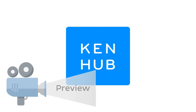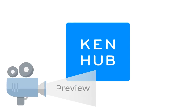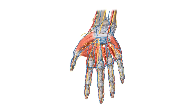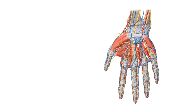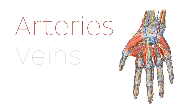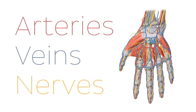Hello everyone, this is João from KenHub and welcome to another anatomy tutorial where today we're going to be covering the neurovasculature of the hand. I'm going to be describing the different structures, different blood vessels and also nerves that we're going to be finding here on your hand. So we're going to look at a list of arteries, veins and nerves that you find on your hand.